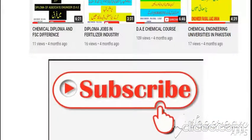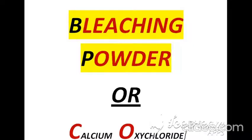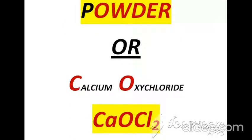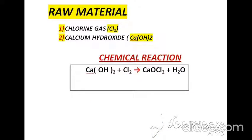In this video I am presenting a lecture on bleaching powder, having a chemical name calcium oxychloride and formula Ca(OCl)₂. I will cover this topic with the help of raw materials, chemical reactions, manufacturing steps, and a process flow diagram is also available.